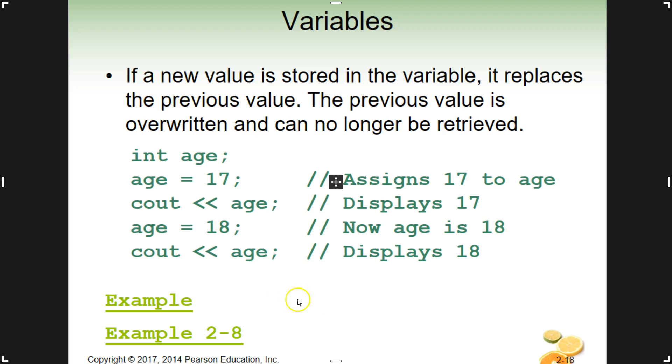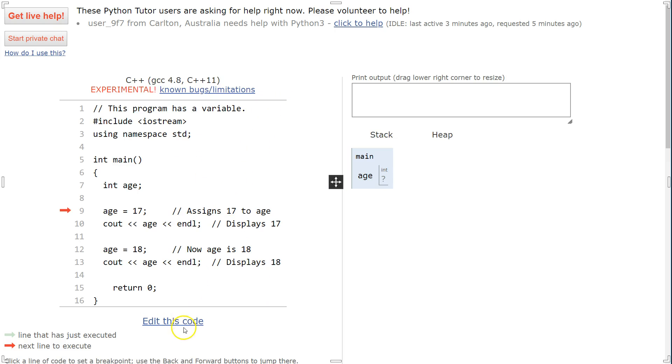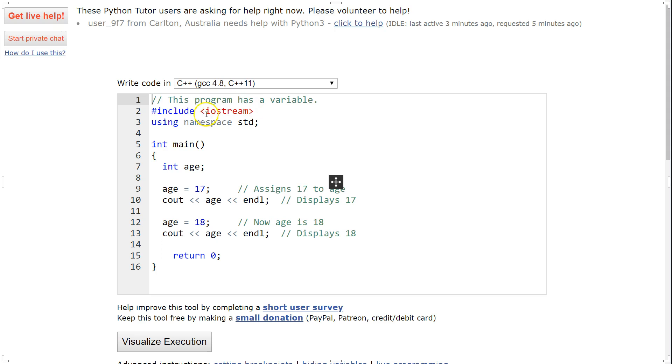Just an example. I'm just going to pull the code up. Let's take a look at this. All right, just looking at the code itself, we have this program has a variable. Standard stuff here. Input output stream library, namespace standard. Here's our int function.